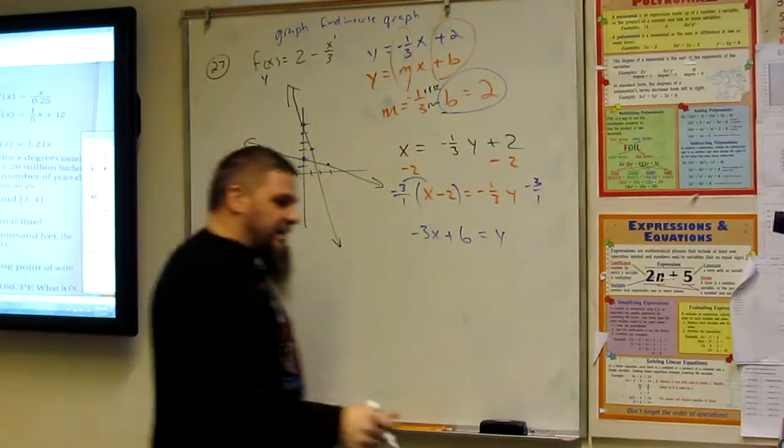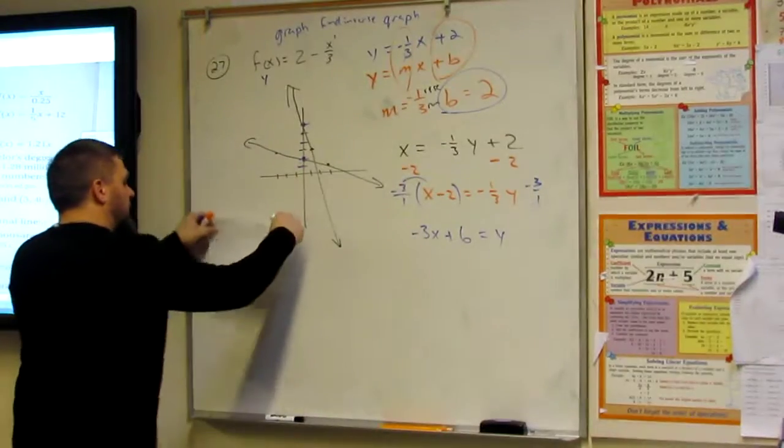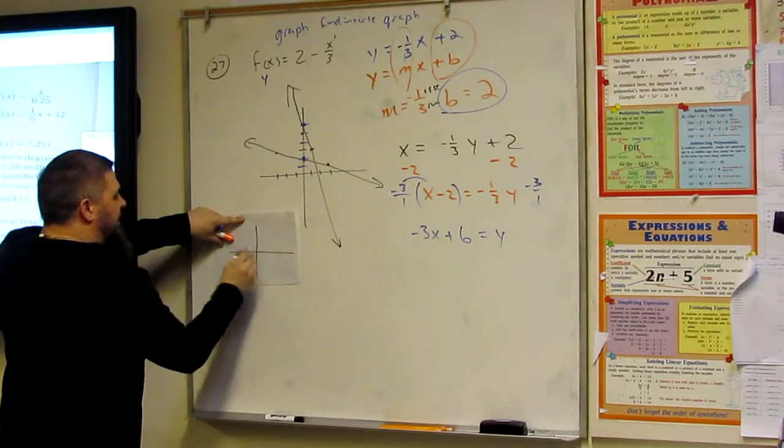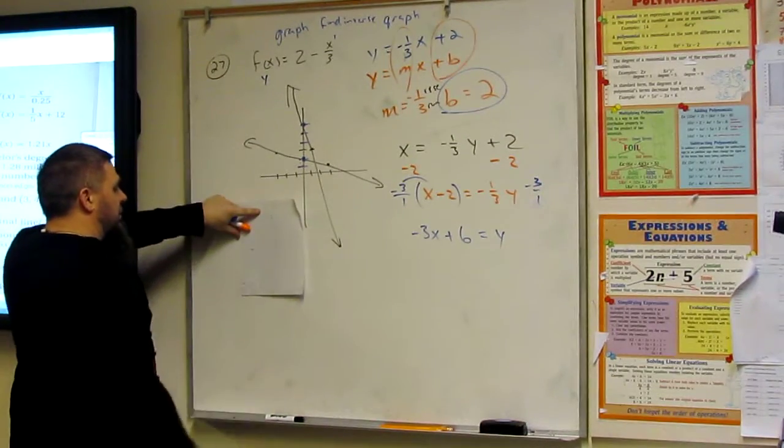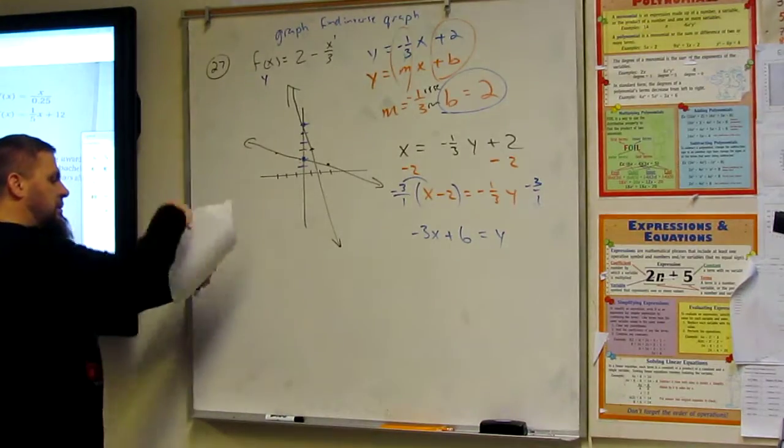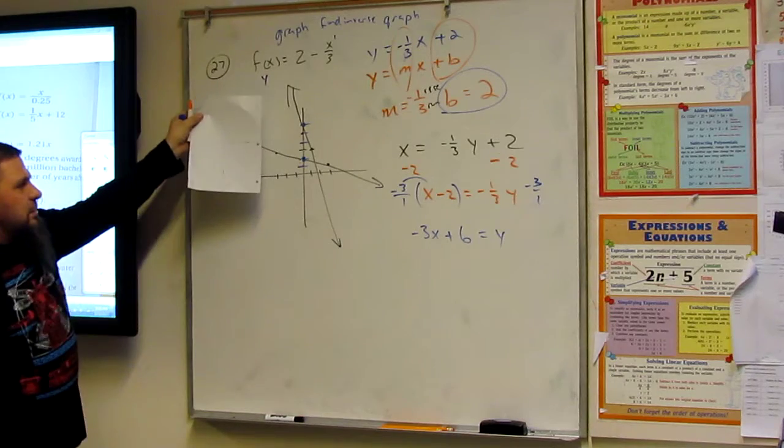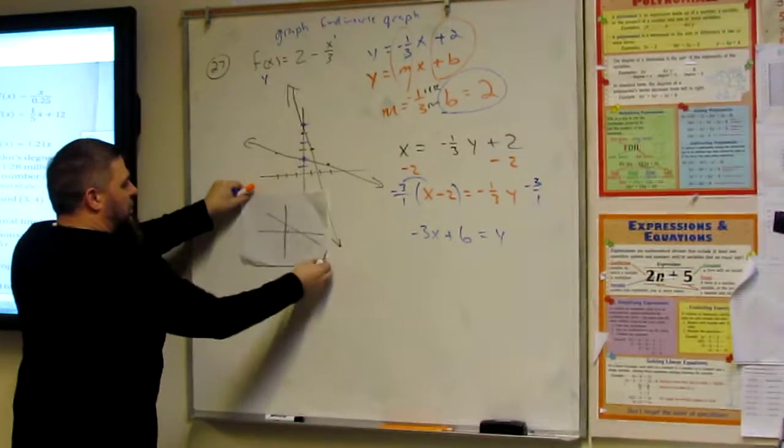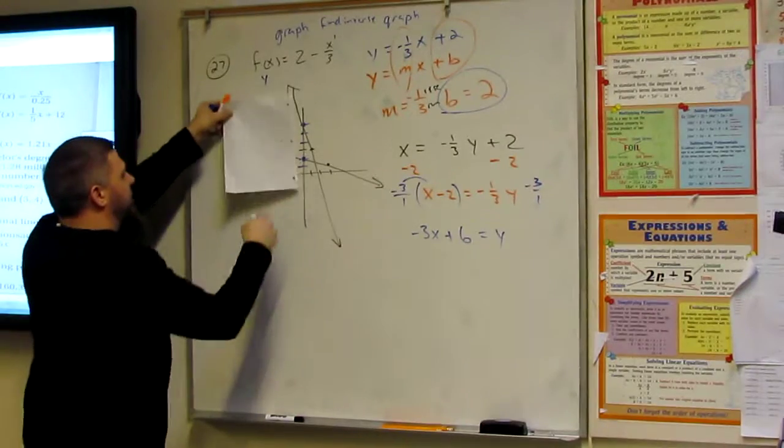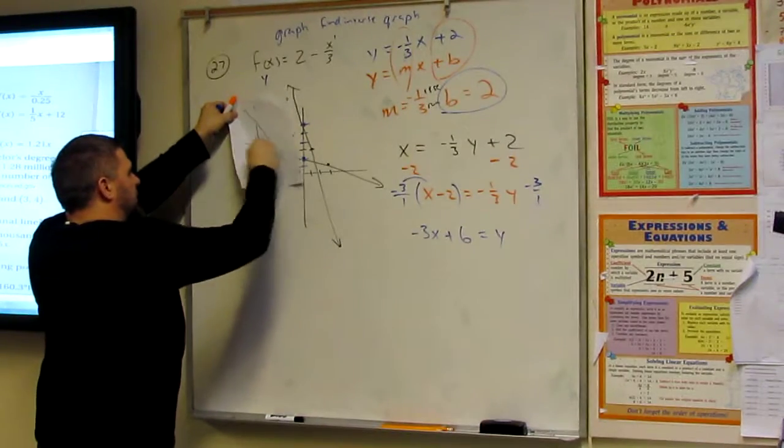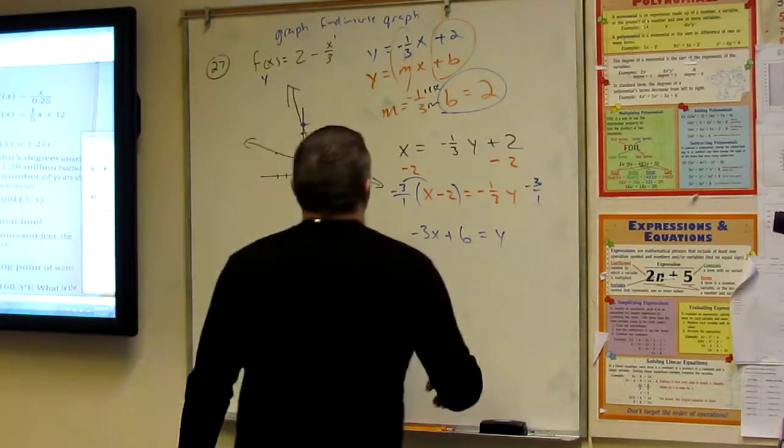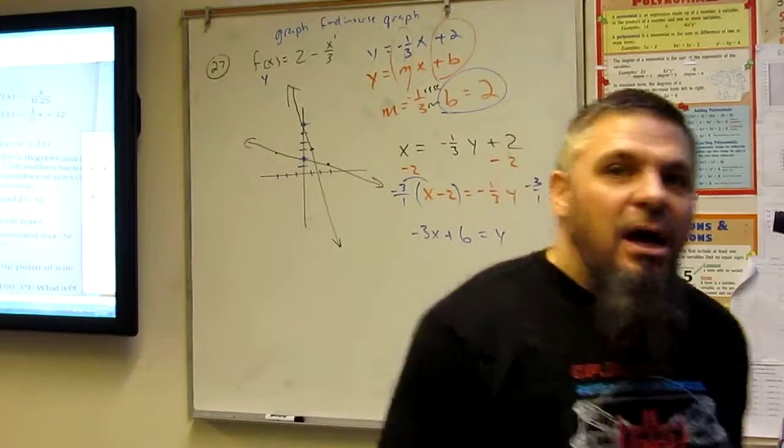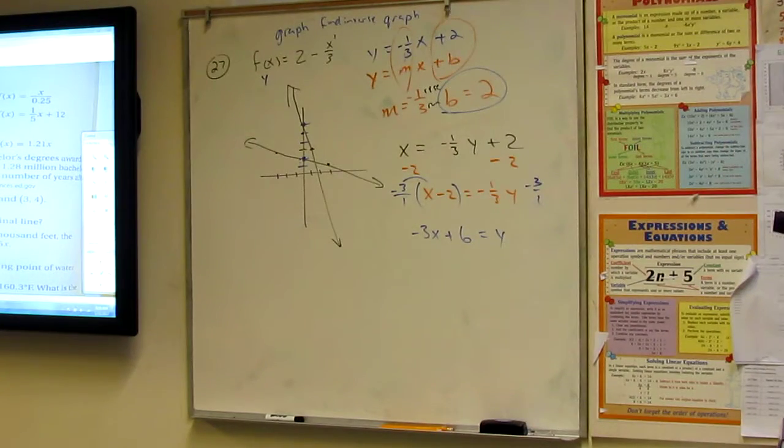And I can double check that. Right? If I take this line and I do this. There we go. Bam! I've got to go up. Bam! There it is. That's our line. Get it? Easy peasy. Okay. That's 27. I wanted to do the other one. Are we out of time? Okay.